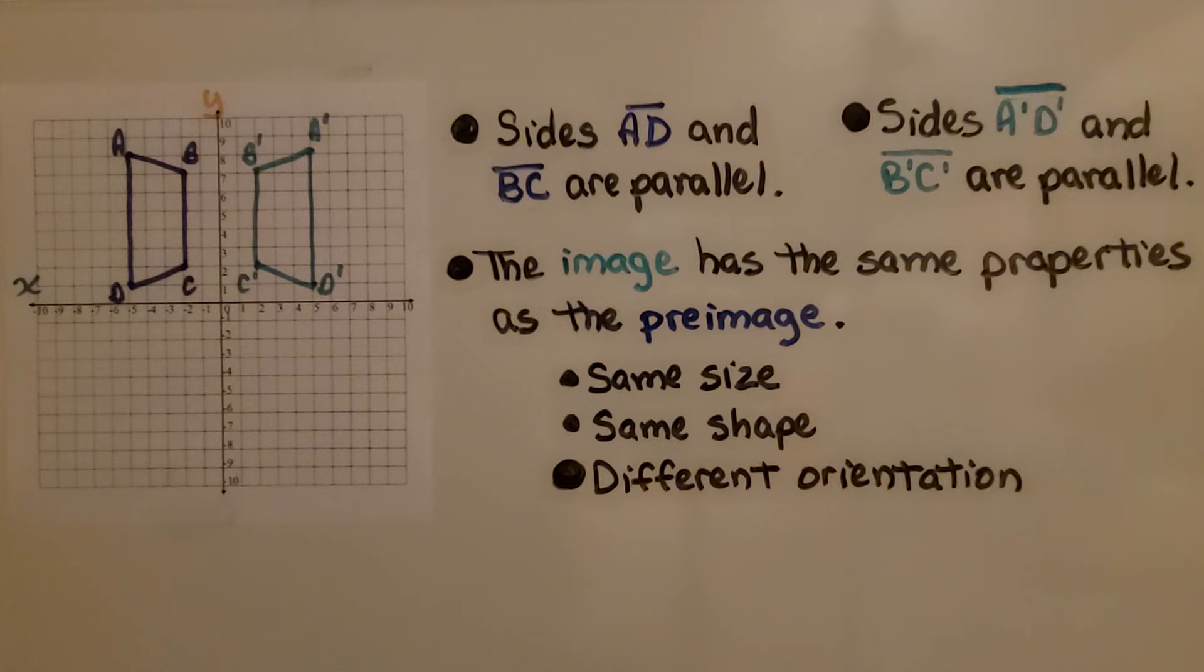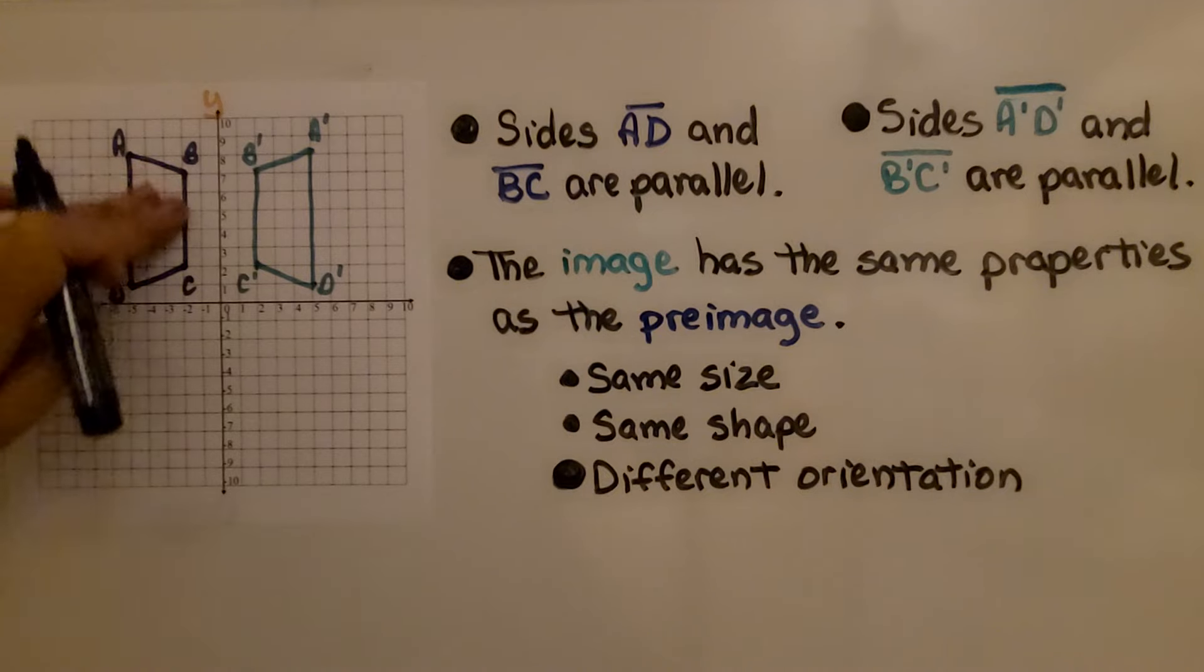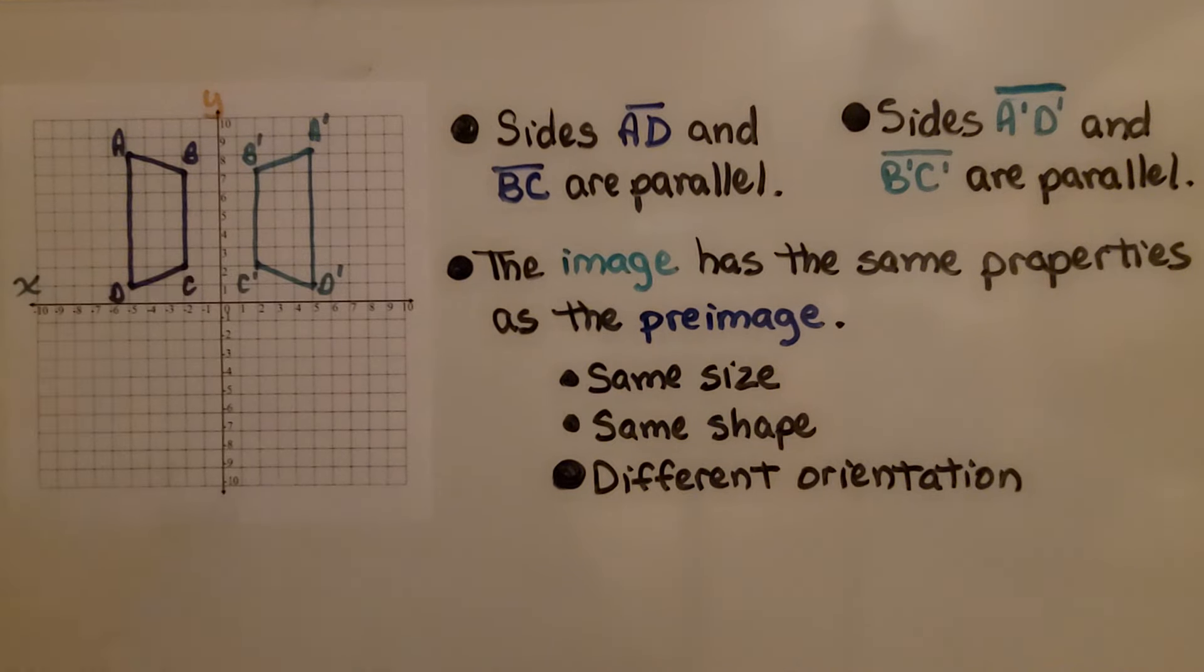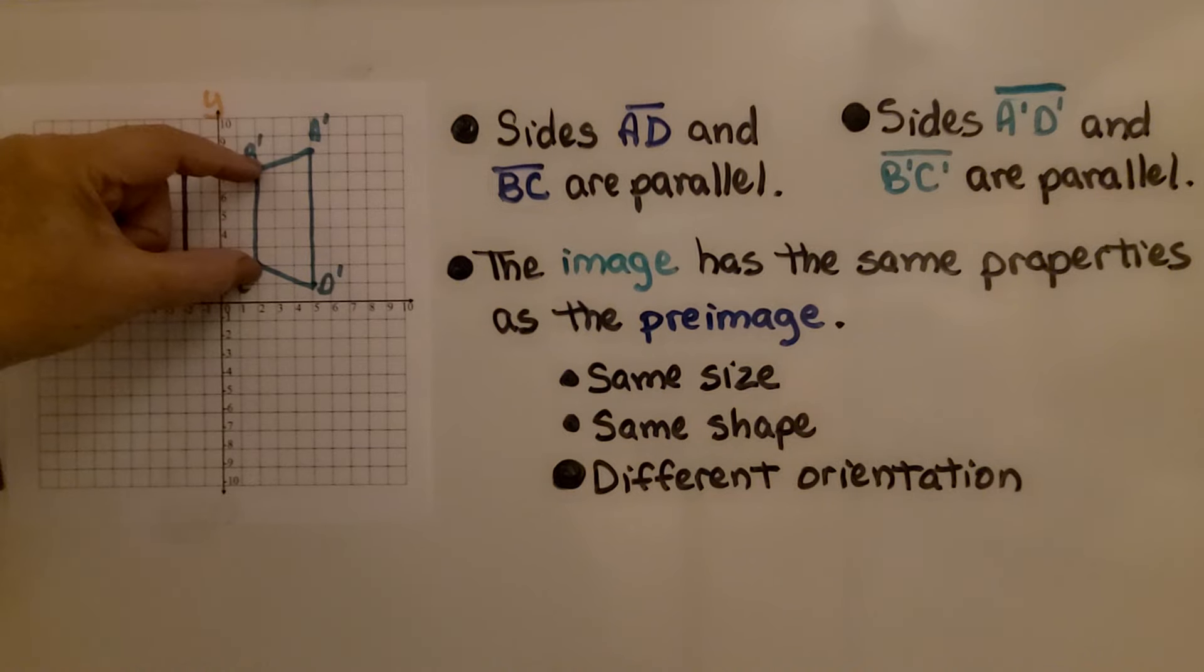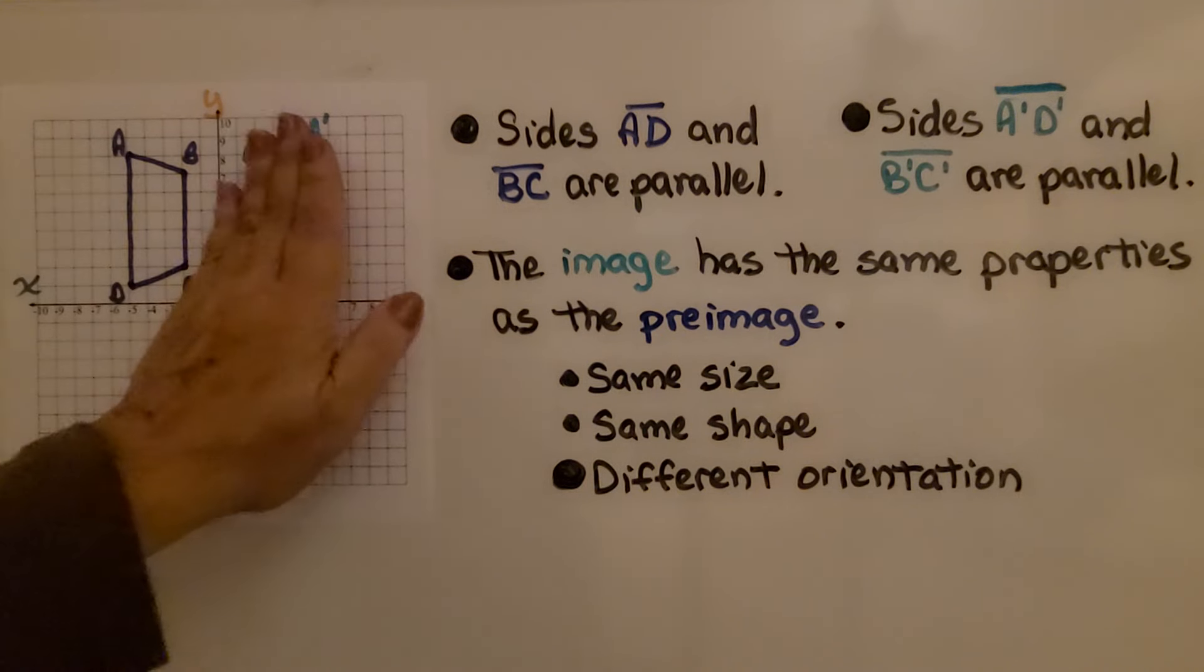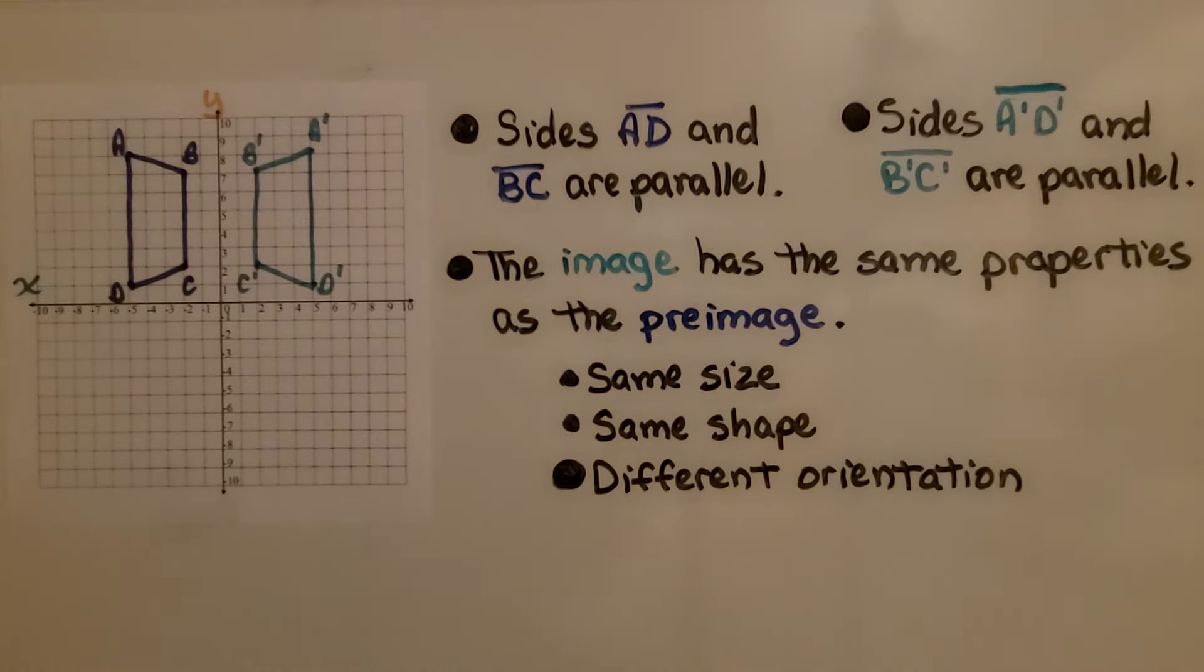The image has the same properties as the pre-image. This shape is the same size as this shape. They are the same shape, and they have different orientations. This one has its narrower segment BC closer to the y-axis. We can see it flipped. It's a reflection.